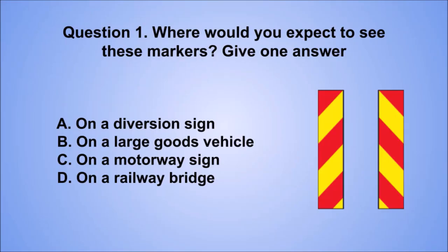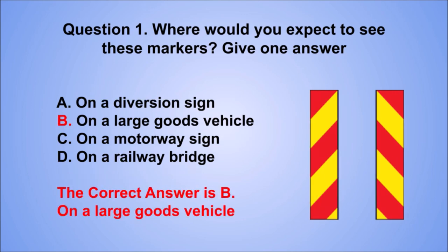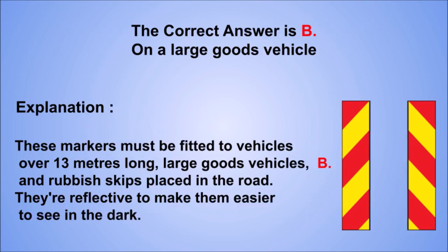Question 1. Where would you expect to see these markers? Give one answer. A. On a diversion sign. B. On a large goods vehicle. C. On a motorway sign. D. On a railway bridge. The correct answer is B, on a large goods vehicle. These markers must be fitted to vehicles over 13 meters long, large goods vehicles, and rubbish skips placed in the road.